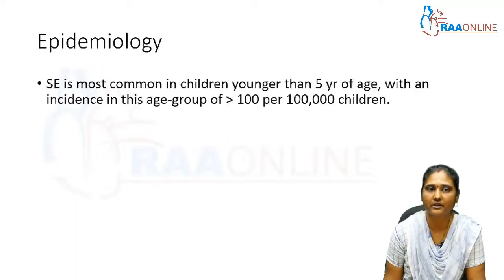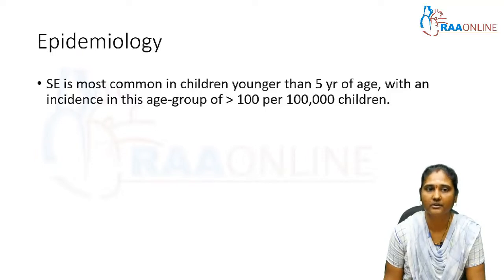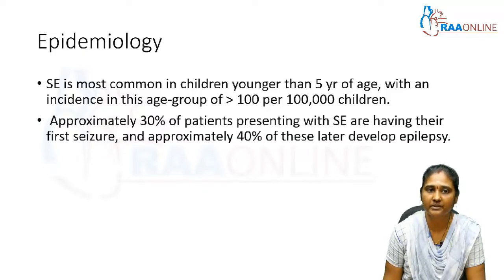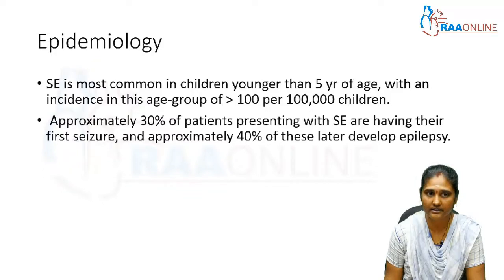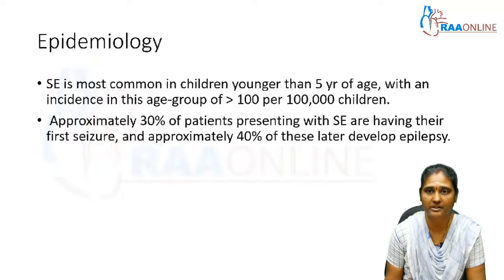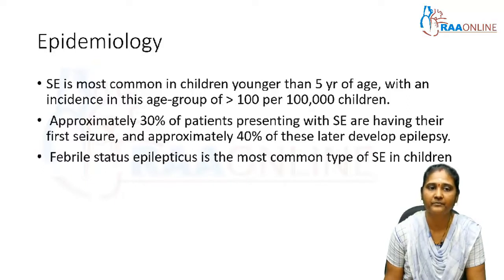Looking at the epidemiology, status epilepticus is more common in children less than 5 years of age, with an incidence rate of more than 100 per 1 lakh population. Approximately 30% of patients presenting with status epilepticus are experiencing their first seizure attack, and 40% of these children may develop epilepsy in later life. Febrile status epilepticus is the most common type in children.